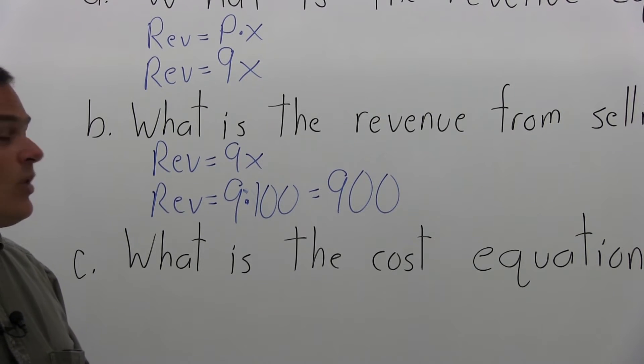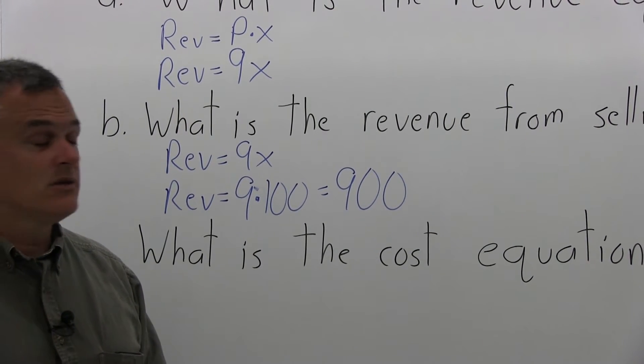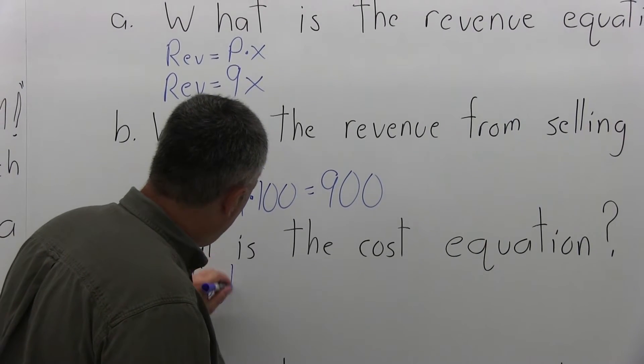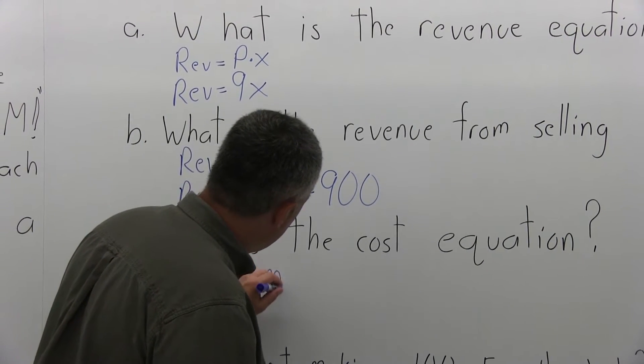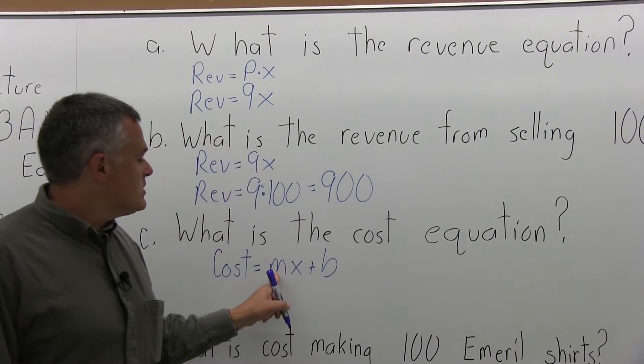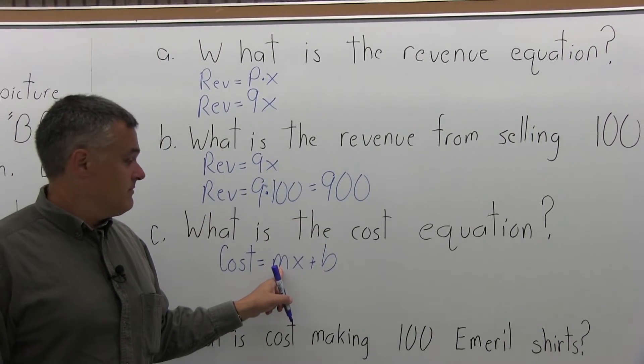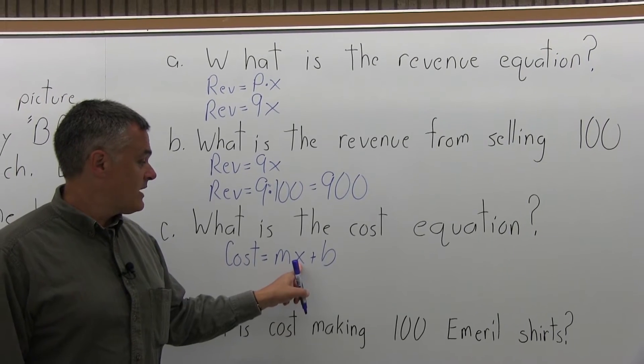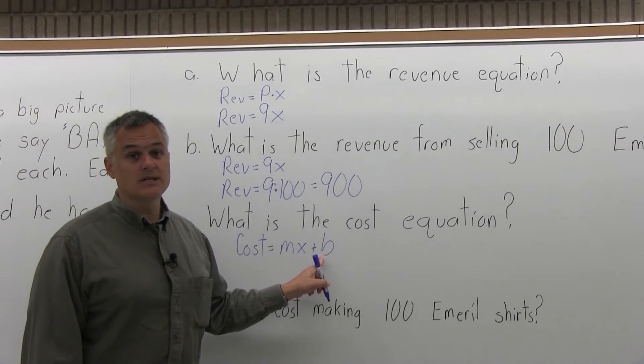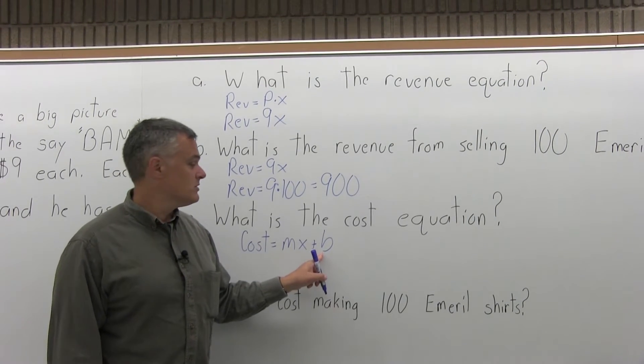Part C, what is the cost equation? The cost equation for any problem is MX plus B. M is the cost price per item, X is the number of items, and B is the fixed cost, the cost to stay in business even if no items are sold.